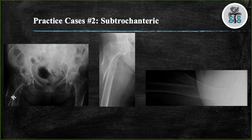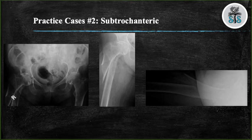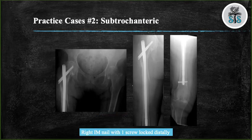Let's go over some practice cases. We have three views: AP pelvis, AP right hip, and cross table lateral of a right hip, demonstrating a right spiral subtrochanteric fracture with posterior medial displacement with shortening. How would you treat this fracture? This fracture was treated with a long cephalomedullary nail with a distal interlocking screw.